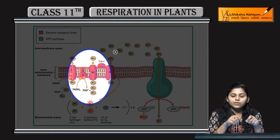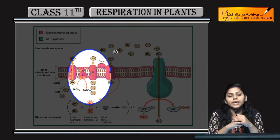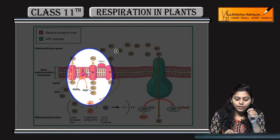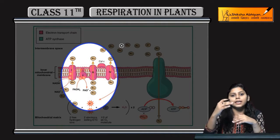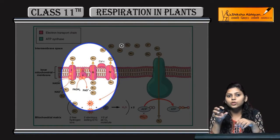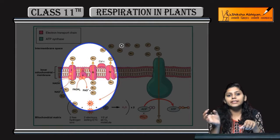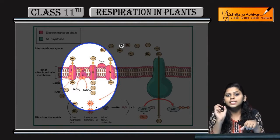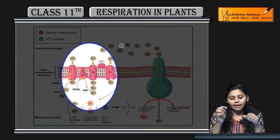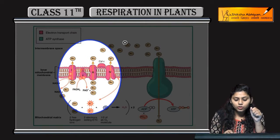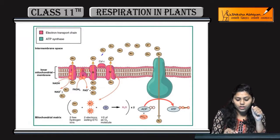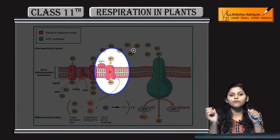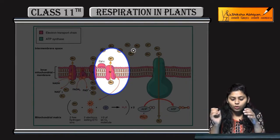Then comes complex three. In complex three, electrons from ubiquinone and complex two are passed on, and cytochrome bc1 complex is formed. Further, on the outer side, there are mobile carrier molecules present. Electrons go from complex three towards cytochrome c, which acts as a mobile carrier.